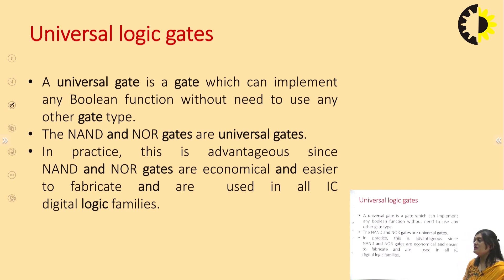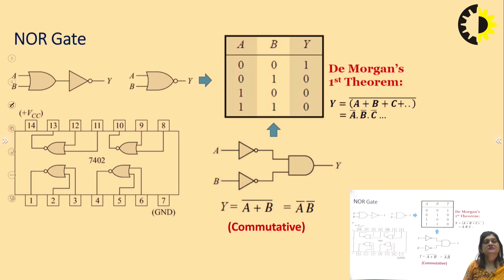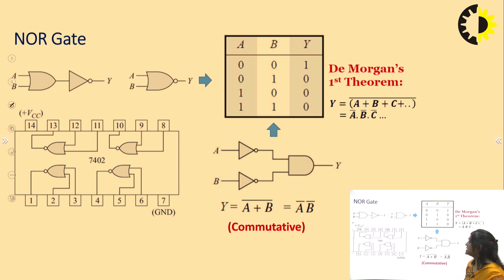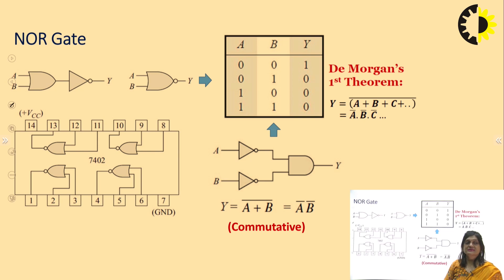NAND and NOR are the universal logic gates. We can design all gates — AND, OR, XOR, XNOR, NOT — using either only NAND or only NOR gates. The NOR gate is the complement of the OR gate. The IC for NOR gate is 7402; inputs are pins 2 and 3, and output is pin 1.